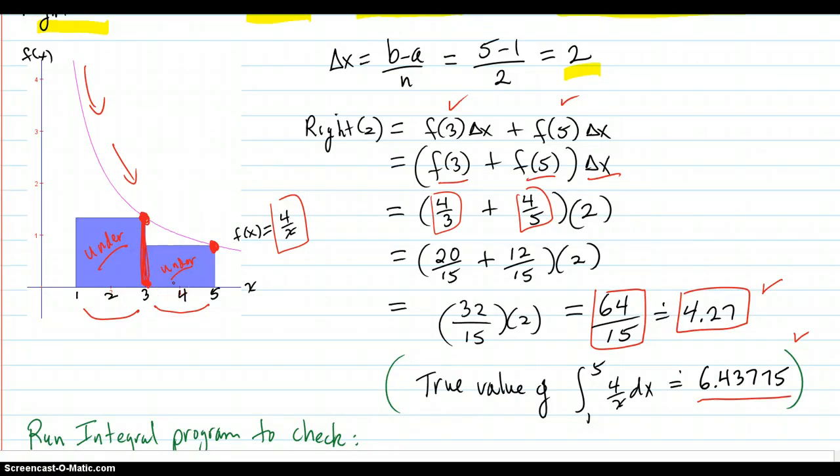Now if the curve fluctuates from increasing to decreasing, then your rectangle sum can end up being either under or over. Again, there's a big difference between the two values. And that is because we only use two rectangles. And you can see there's a lot of missing area here.